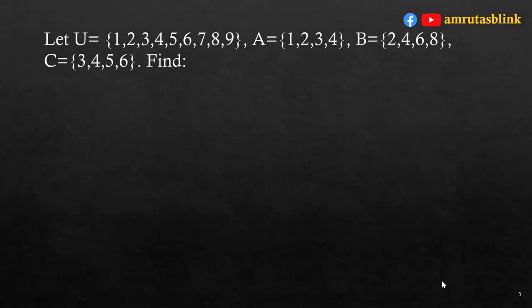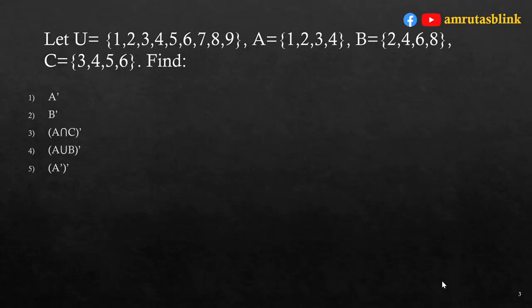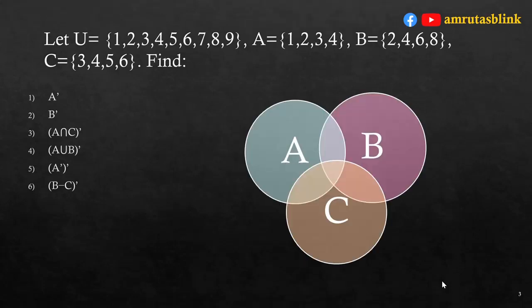Let U = {1,2,3,4,5,6,7,8,9}, A = {1,2,3,4}, B = {2,4,6,8}, and C = {3,4,5,6}. We need to find A complement, B complement, (A∩C) complement, (A∪B) complement, A double complement, and (B minus C) complement. We will first draw a Venn diagram to identify exclusive and intersecting elements.